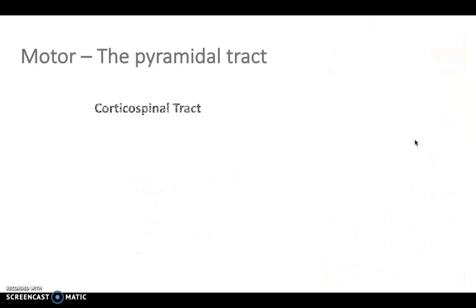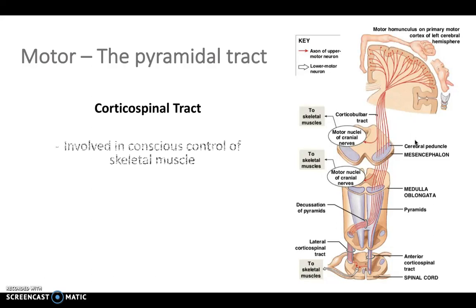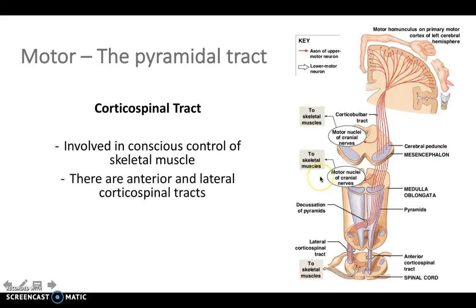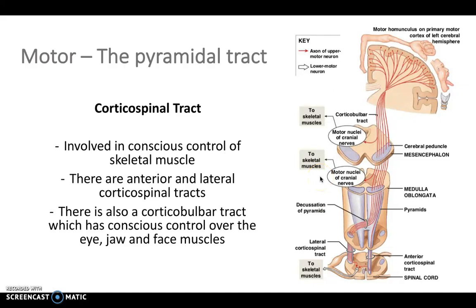The pyramidal tract, the corticospinal tract, involves conscious control of skeletal muscle. Now we're descending — going from the cerebral cortex downwards. The cerebral cortex releases the impulse, which passes down through the internal capsule and decussates at the pyramids of the medulla oblongata, then descends down the spinal cord on the contralateral side to where it was released in the brain, to the skeletal muscles. There are anterior and lateral corticospinal tracts, and also a corticobulbar tract responsible for conscious control of the eye, jaw, and face muscles.